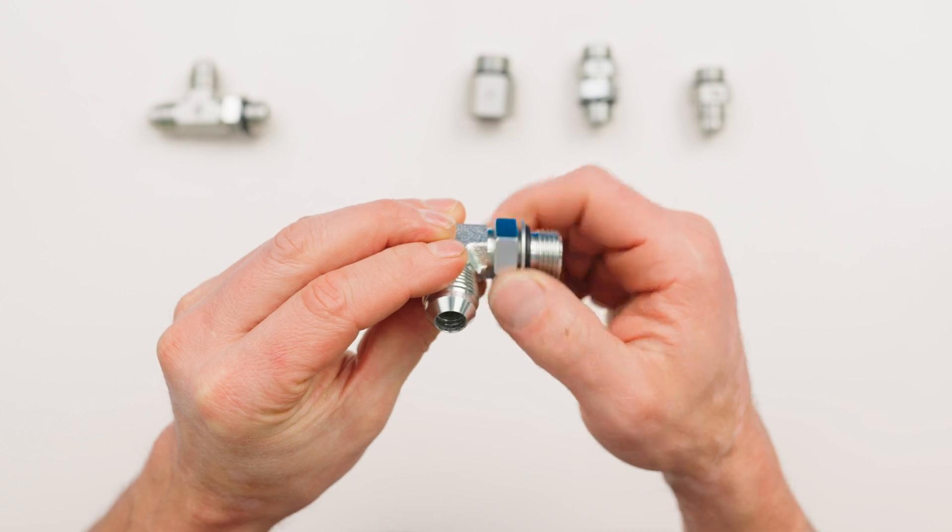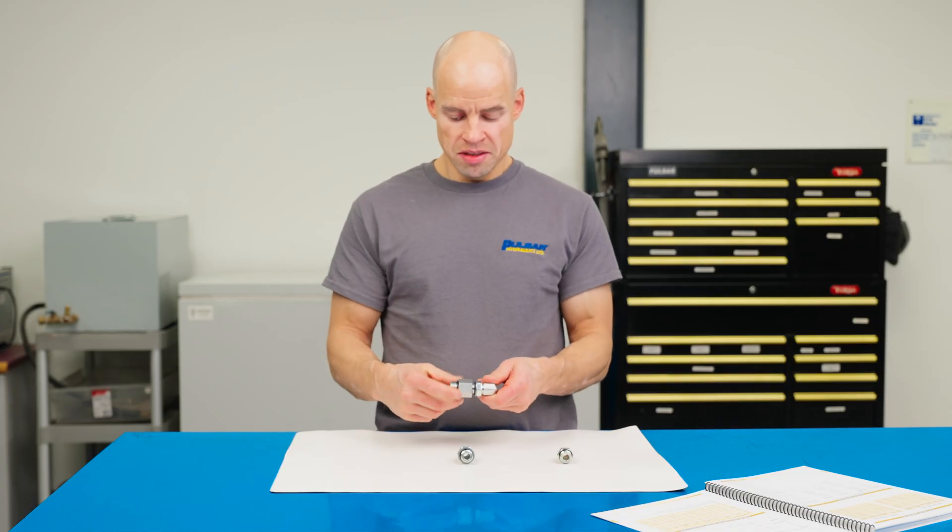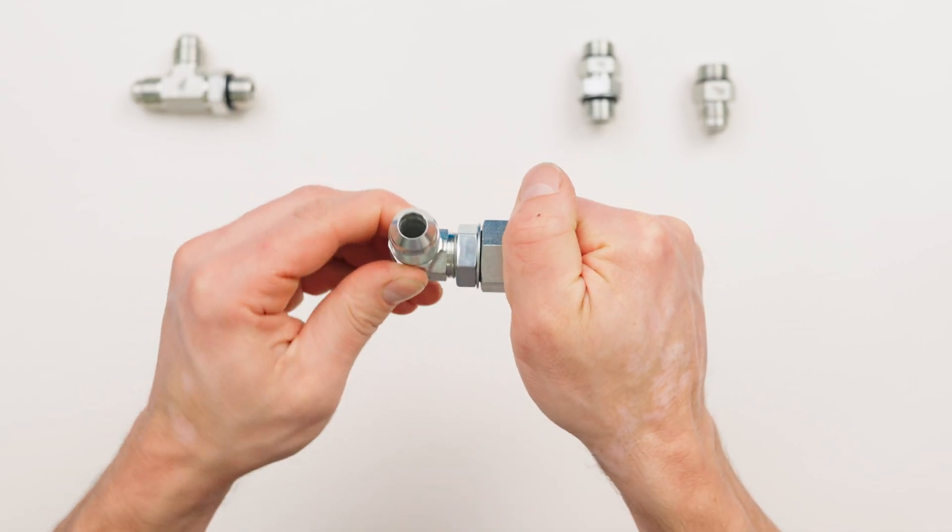All Pulsar ORB elbows and tees are adjustable to allow for easy orientation and alignment.